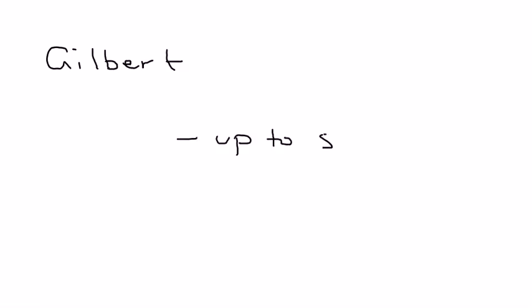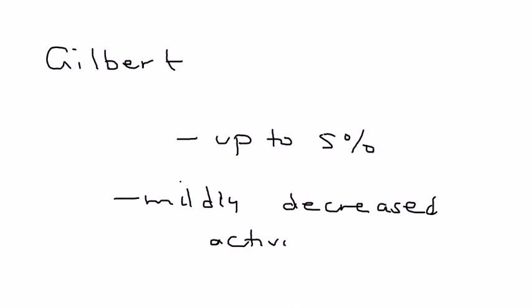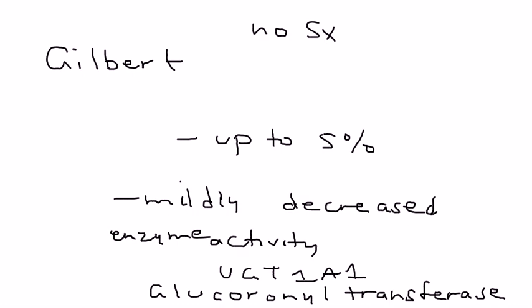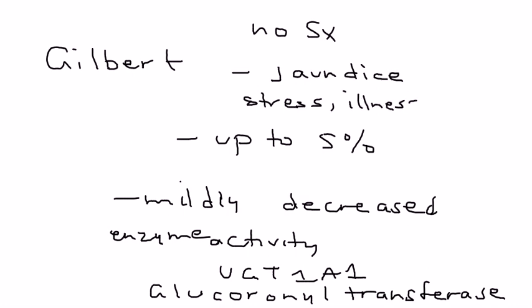Gilbert syndrome is actually very common — up to 5% of the general population has it. It is a disorder where you have mildly decreased activity of the UGT1A1 enzyme. As a result, there are no real signs or symptoms. The exception, which they love to use in clinical vignettes, is that jaundice will occur in states of stress, illness, or fasting. These three conditions tend to trigger jaundice, but otherwise the patient is asymptomatic.